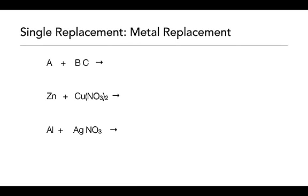In our general metal single replacement reaction, A plus BC: A is a metal with a zero oxidation state — it's uncombined, so it hasn't gained or lost electrons. Compound BC has B as a metal cation that has lost electrons, and C as some anion. In the reaction, B trades places with A: on the product side, B is by itself with a zero oxidation state, and you form the compound AC where A is now the cation and C remains the same anion.